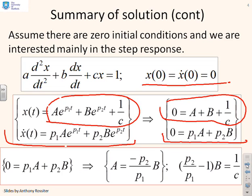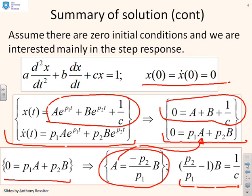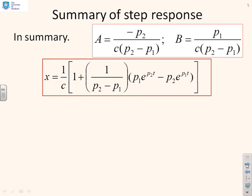Let's solve those equations. First, 0 equals p₁A plus p₂B can be used to give me A equals minus p₂/p₁ times B. If I now put this value of A into the first equation, rearrange and rewrite, I get (p₂/p₁ minus 1) times B equals 1/c. So I can now solve for B in terms of little c, and once I've solved for B, I can solve for A. Putting this all together, capital A equals minus p₂ over c times (p₂ minus p₁), and capital B equals p₁ over c times (p₂ minus p₁).